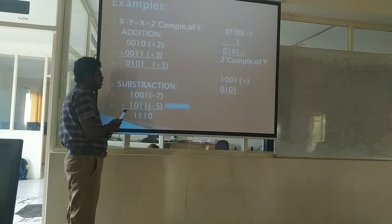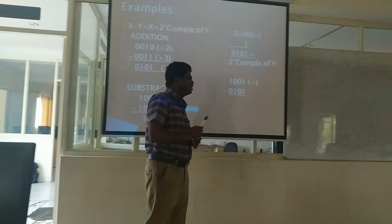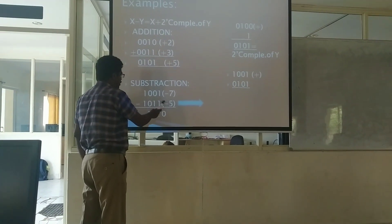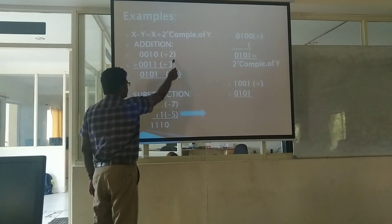So for example, the numbers given here are minus 7 and minus 5. So assume that this is x, this is the y value. For the x value you don't do any changes, but for the y value, what you do is convert it to the 2's complement.